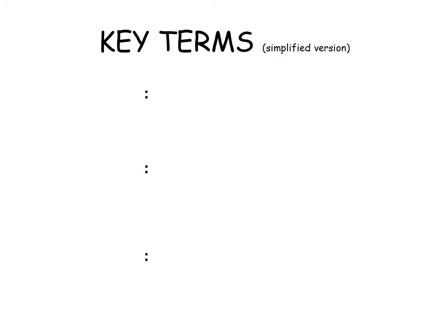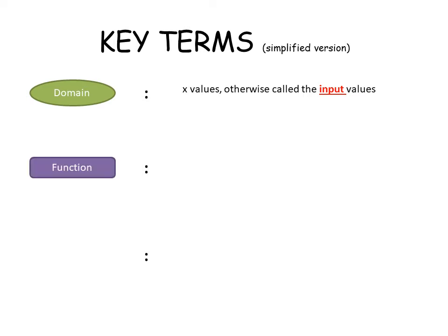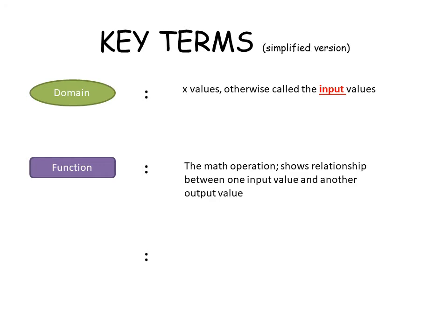Let's look at the key terms we just covered. Note that these are simplified, somewhat oversimplified definitions, just for the purpose of this lesson. The domain refers to the x values, or what we call the input values — those are the values that go into the equation or operation.